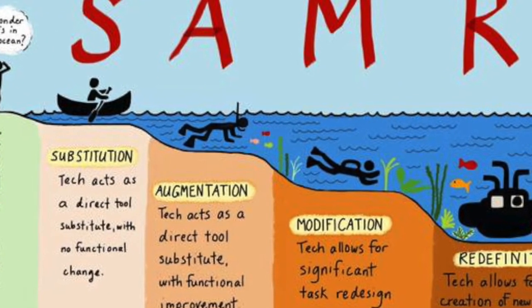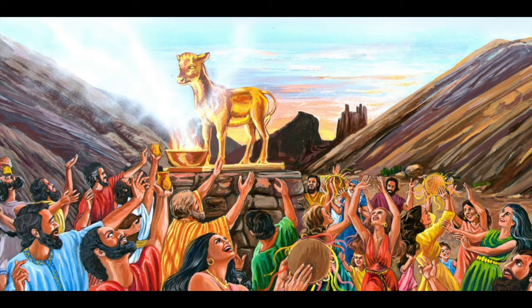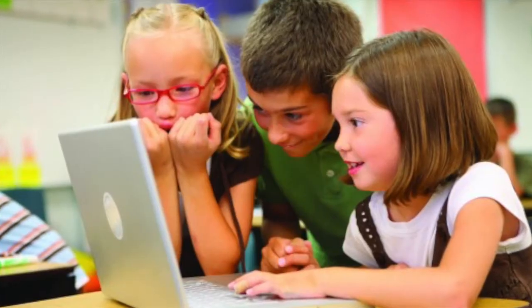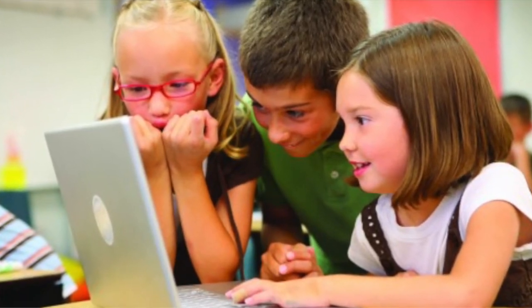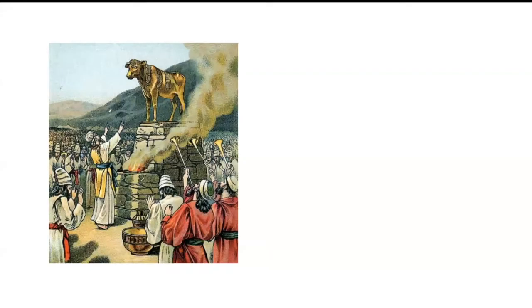Before we go further, let's keep in mind this Old Testament story. Moses goes up the mountain to talk to God, and by the time he comes down, the people have reverted to idol worship — creating a golden calf. One lesson: when we're not being watched, we tend to gravitate towards shiny things. So one of our key roles as teachers is to help students learn to use technology in ways that facilitate learning and are responsible, because people naturally tend to gravitate towards the new and shiny and utilize it in unproductive ways.